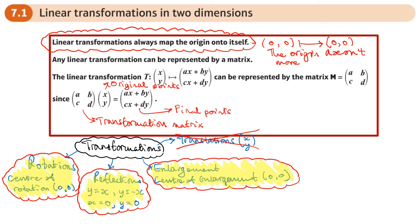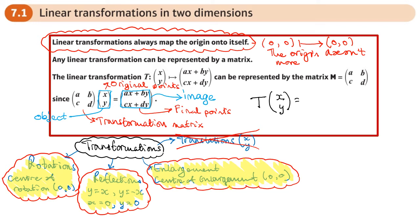The proper wording is we talk about the object and the image. The object points — the points where we start — are here. We can apply the transformation to lots of coordinates to move a shape around, and the result is the image — this is where the points move to. The order of multiplication is important: the transformation matrix always goes in front of the points. So the transformation of (x, y) gives new points (x', y').